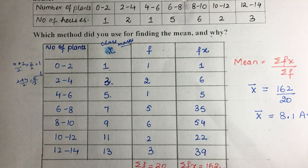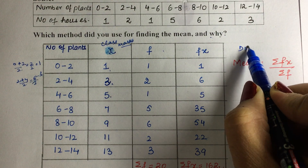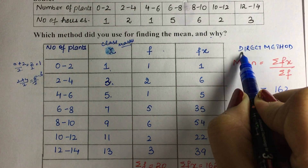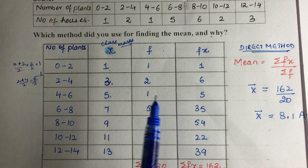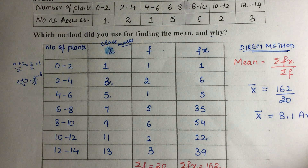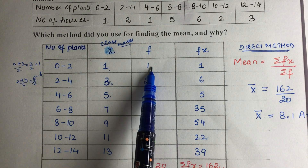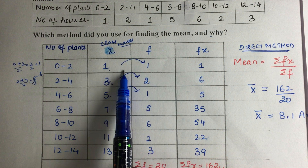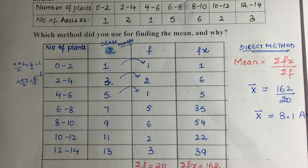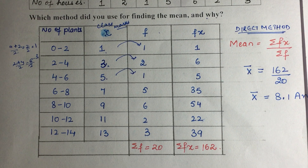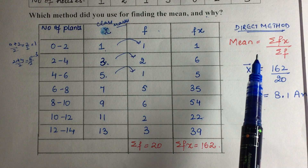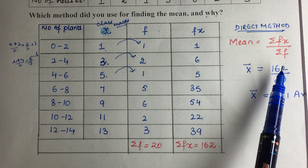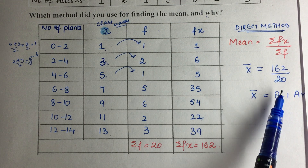The basic method number one is the Direct Method. In the direct method, we have to find f into x. Multiply each frequency f by its class mark x to get fx. Get the total of all fx values. The mean formula for direct method is: mean equals total of fx divided by total of f.